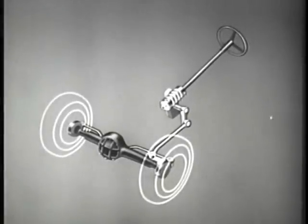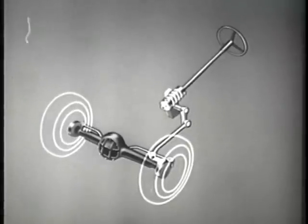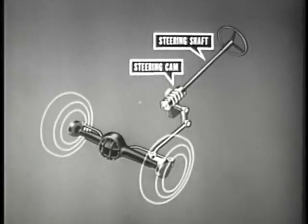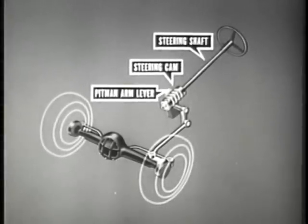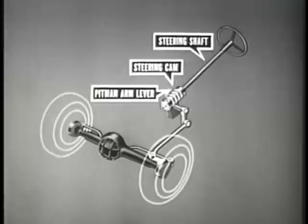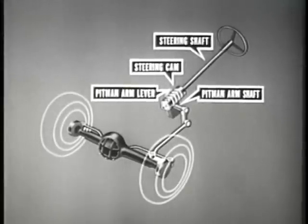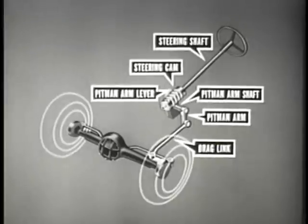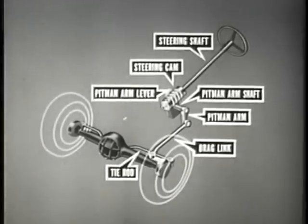This vehicle uses a cam and lever steering mechanism consisting of the following components: a steering shaft and cam, a pitman arm lever, a pitman arm shaft and pitman arm, a drag link, and a tie rod.